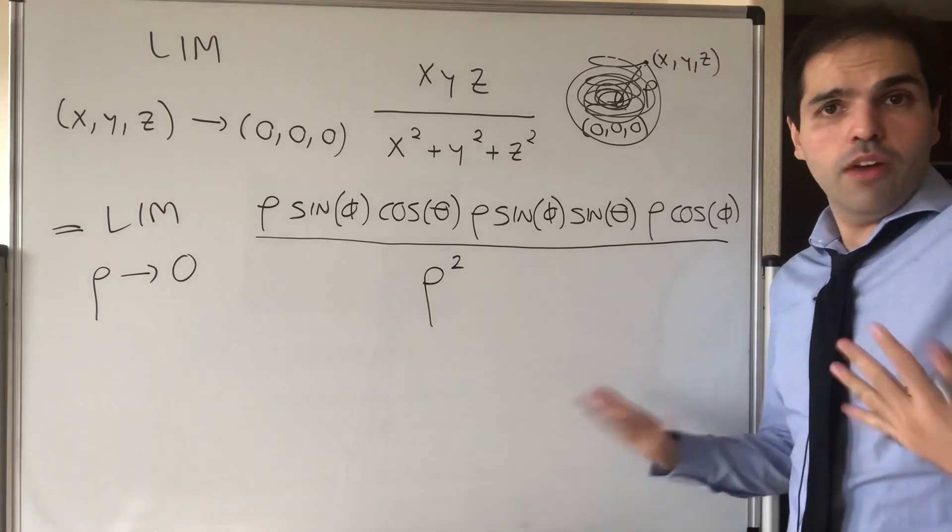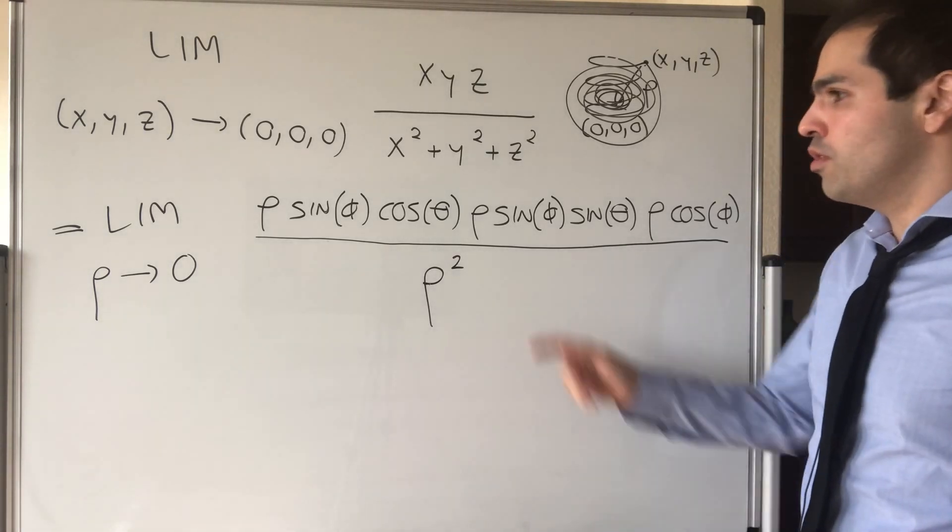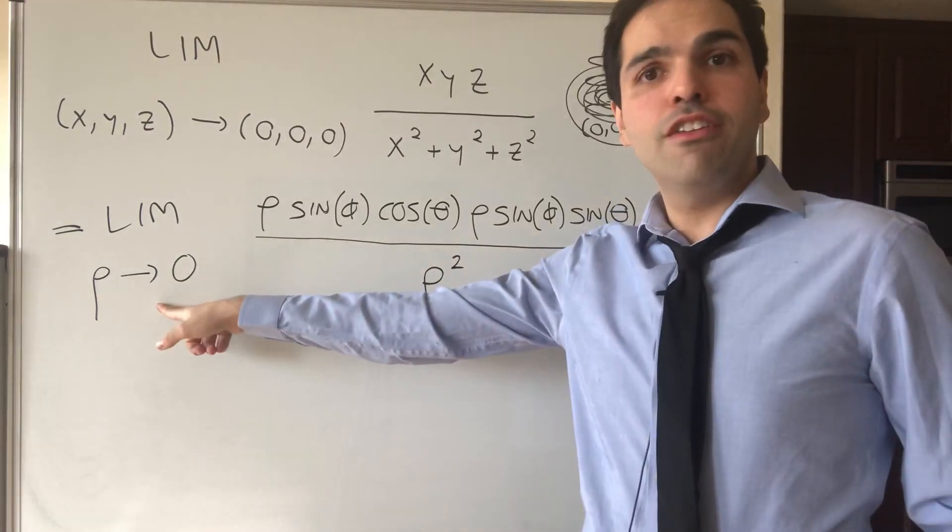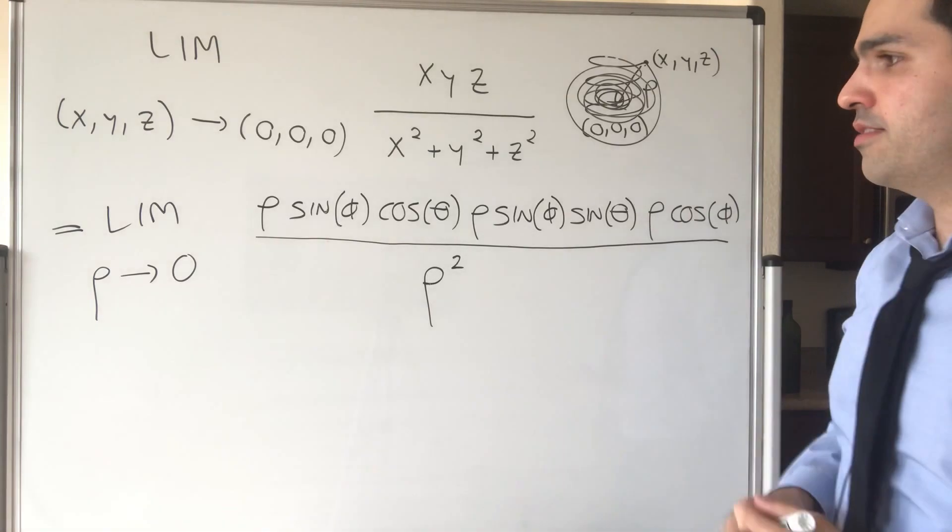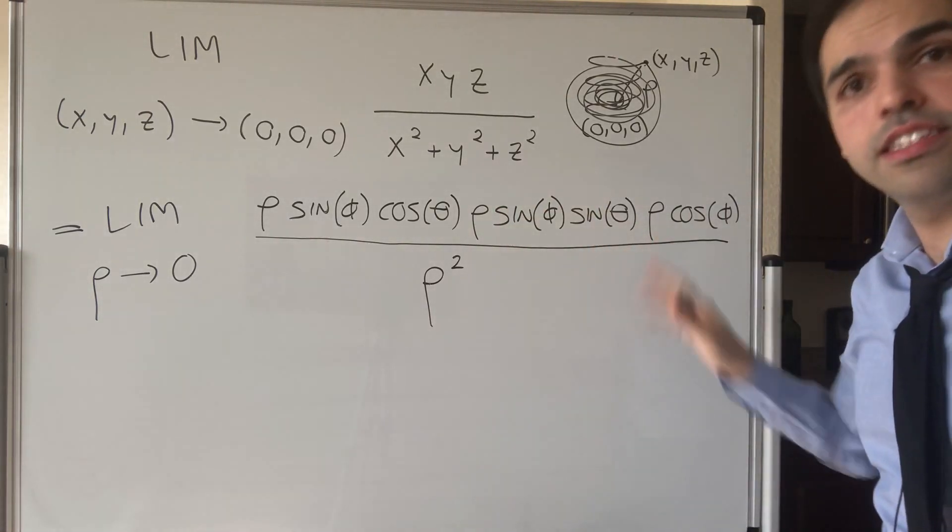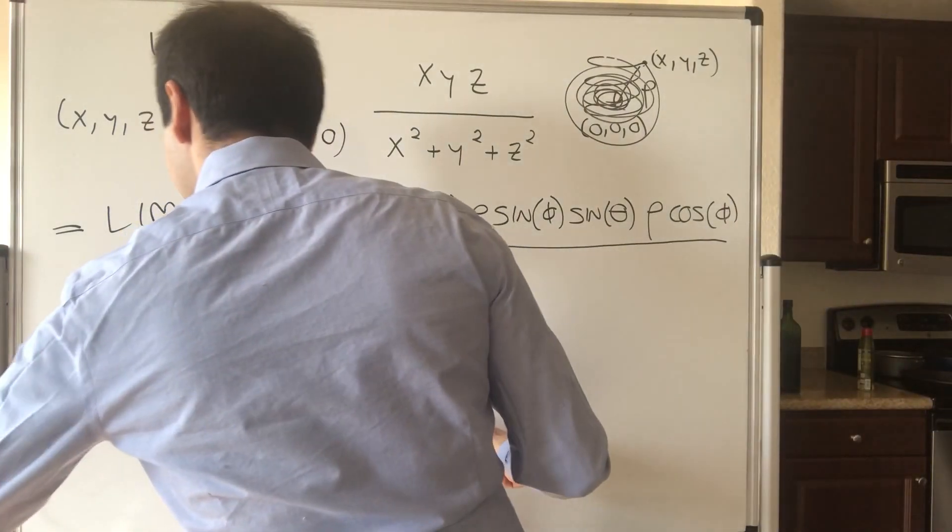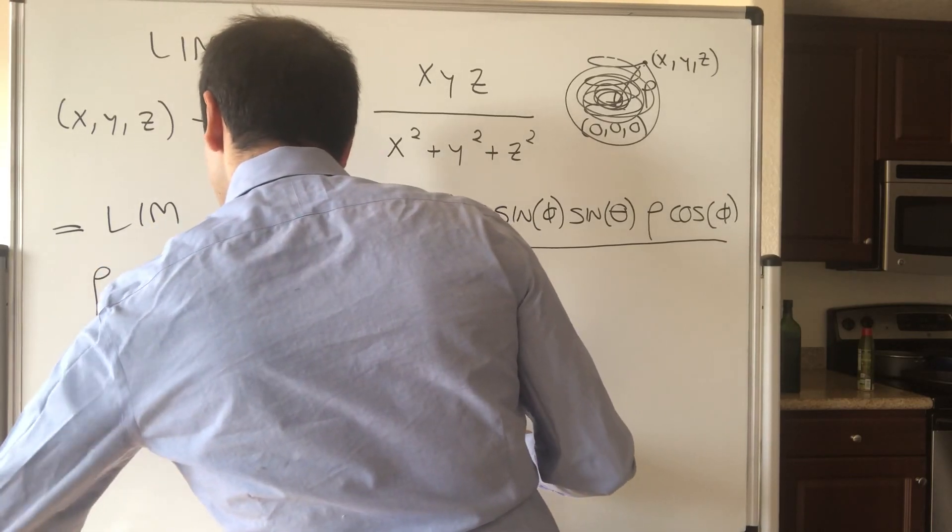But what I want to show you is it actually doesn't matter what they're equal to, because already from the fact that rho is zero, we can conclude what this is. Because let's simplify this a little bit. So this is the limit as rho goes to zero.